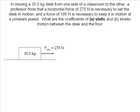In part A, we are looking at static friction, so our force applied is 275 newtons. We will draw this force in the positive x direction. We also have to include the weight of our object in our free body diagram. The weight of the 35 kilogram box is 343 newtons. The next force we include is the force of static friction. We draw this at the bottom of our box because friction occurs when two surfaces are in contact with one another.